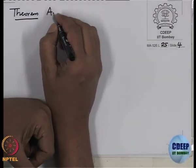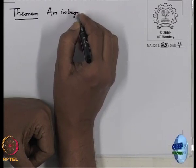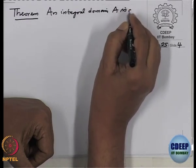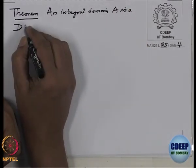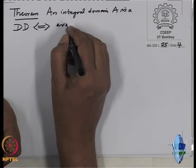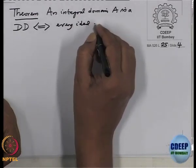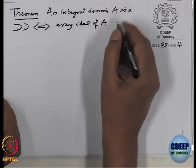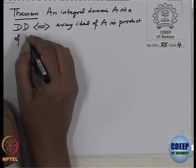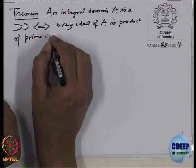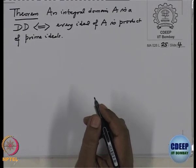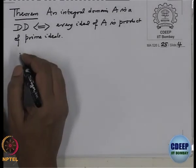So the theorem is: let A be an integral domain. Then A is a Dedekind domain if and only if every ideal of A is a product of prime ideals. The uniqueness will be stated in a more precise form in the corollary. Proof.